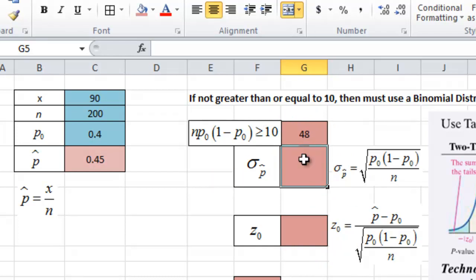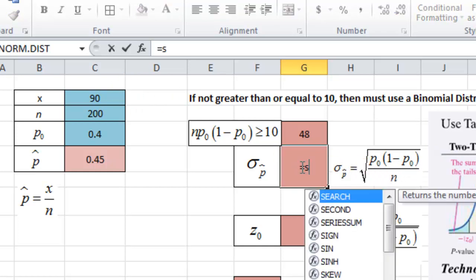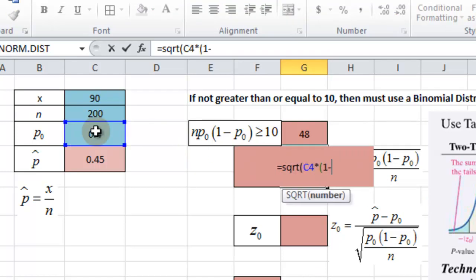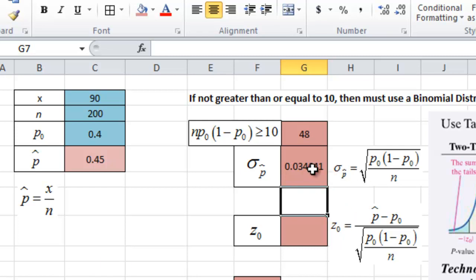And then we need the standard deviation, which would be this equation here. It's a basic normal standard deviation of the values that we have. We need the square root of p-naught times 1 minus p-naught divided by the n value, and then close the parentheses for the square root. So there's our standard deviation.